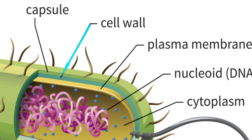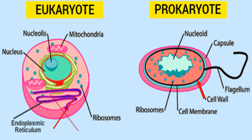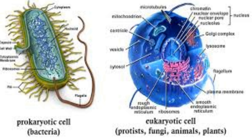Prokaryotic cell walls are present and contain murein (peptidoglycan). Eukaryotic cell walls are sometimes present — for example in plants, animals, and fungi. In plants, cell walls contain cellulose and/or lignin, and in fungi they contain chitin.